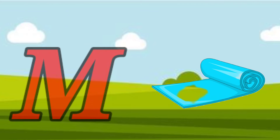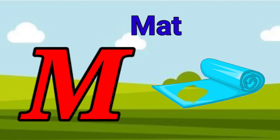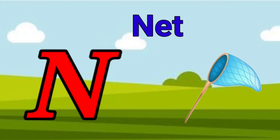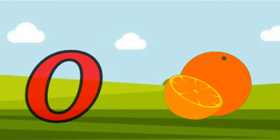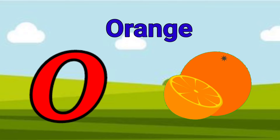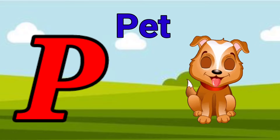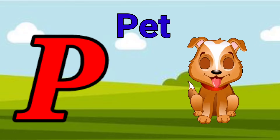M is for mat, m-m-mat. N is for net, n-n-net. O is for orange, o-o-orange. P is for pet, p-p-pet.